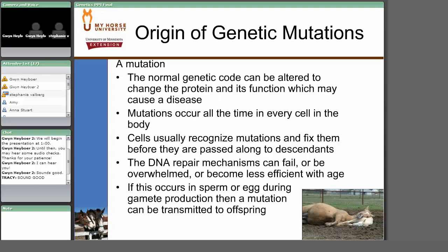A mutation occurs when the genetic code within a gene is slightly changed, and because of that change in sequence, you get a change in the protein produced. By changing the protein, you may change its function, which can result in a disease or a different trait like a different coat color. Cells divide all the time, and during cellular division, small mutations can spontaneously occur. Most of the time, cells recognize and fix those changes, but DNA repair mechanisms can fail or be overwhelmed, and become less efficient with age. If mutations in developing sperm or eggs don't get fixed, they can be passed along from sire and dam to offspring.